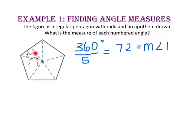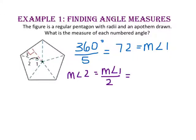Angle 2 is created by drawing the apothem, or the altitude, from the vertex angle to the side. So this will be half of the measure of angle 1. Since the measure of angle 1 was 72 degrees, when we divide that by 2, the measure of angle 2 will be 36 degrees.